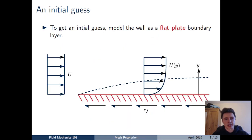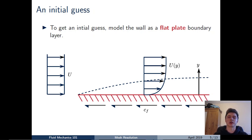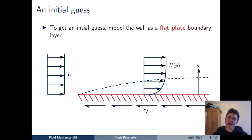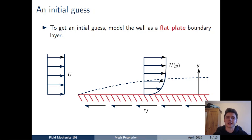The approach is to model the wall as a flat plate boundary layer. Empirical data is available for this simple flow scenario, and we use those empirical results to estimate the wall shear stress, then back out a value of YP for the initial mesh guess. I'll now run through the process step by step.